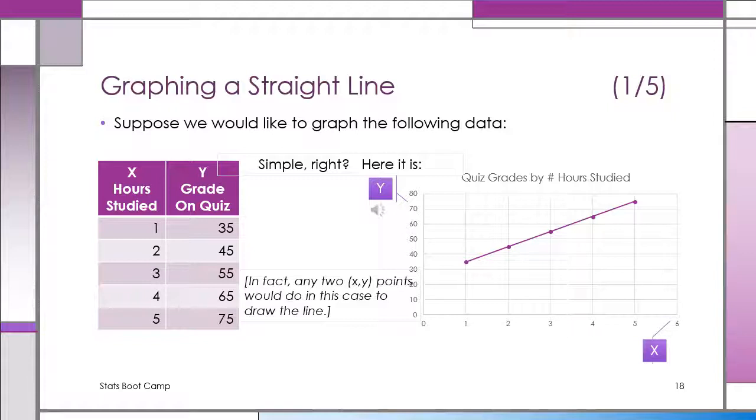What does a straight line mean? In this example, we see hours study, that's X, and Y is the grade on a certain quiz. This actually turns out to be a straight line. In a moment, you'll see how we know it's a straight line, but we plot it for you on the right, and you see these five points are exactly on a straight line.